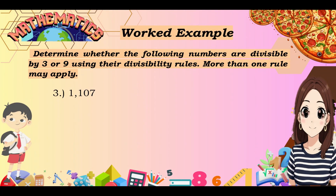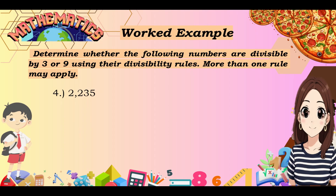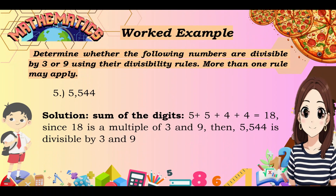Next: 1,107. Adding the digits: 1 plus 1 plus 0 plus 7 equals 9. Since 9 is a multiple of both 3 and 9, then 1,107 is divisible by 3 and 9. Number 4: 2,235. Adding the digits: 2 plus 2 plus 3 plus 5 equals 12. Since 12 is a multiple of 3 but not 9, then 2,235 is divisible by 3 only. Lastly, number 5: 5,544. The sum of its digits is 5 plus 5 plus 4 plus 4 equals 18. Since 18 is a multiple of both 3 and 9, then 5,544 is divisible by both 3 and 9.